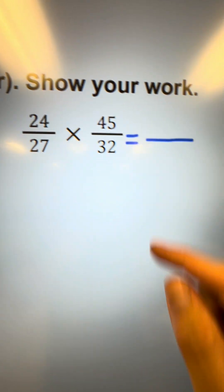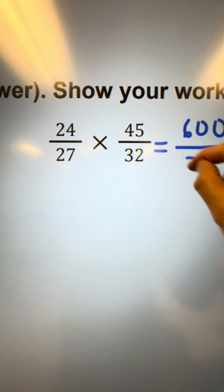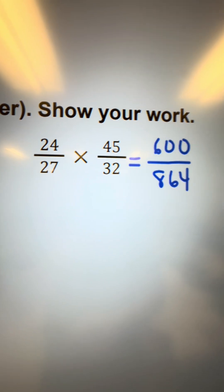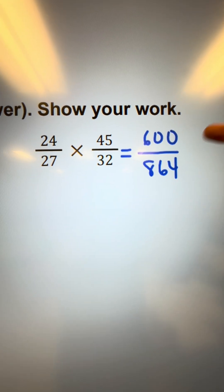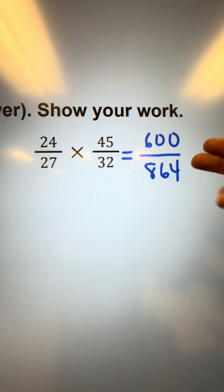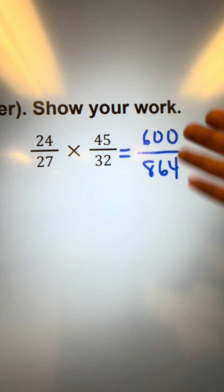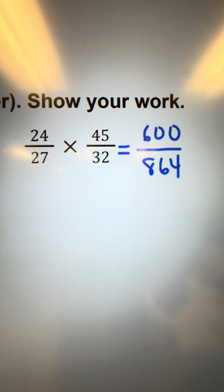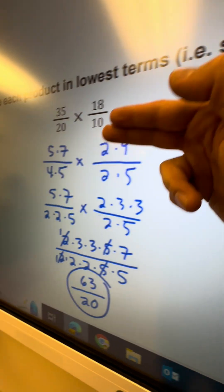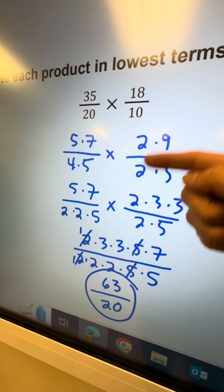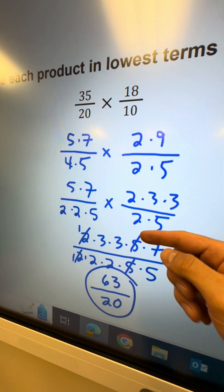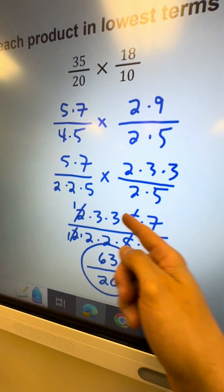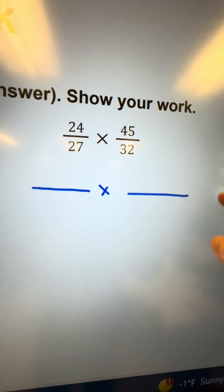Here's another example. If you multiply everything across in the first step, you get 600 over 864 — really big numbers, and it's not going to be obvious what their greatest common factor is. So what I recommend, like I said before, is to go through the process of writing out the prime factorization so you can find the common factors and quickly eliminate them.